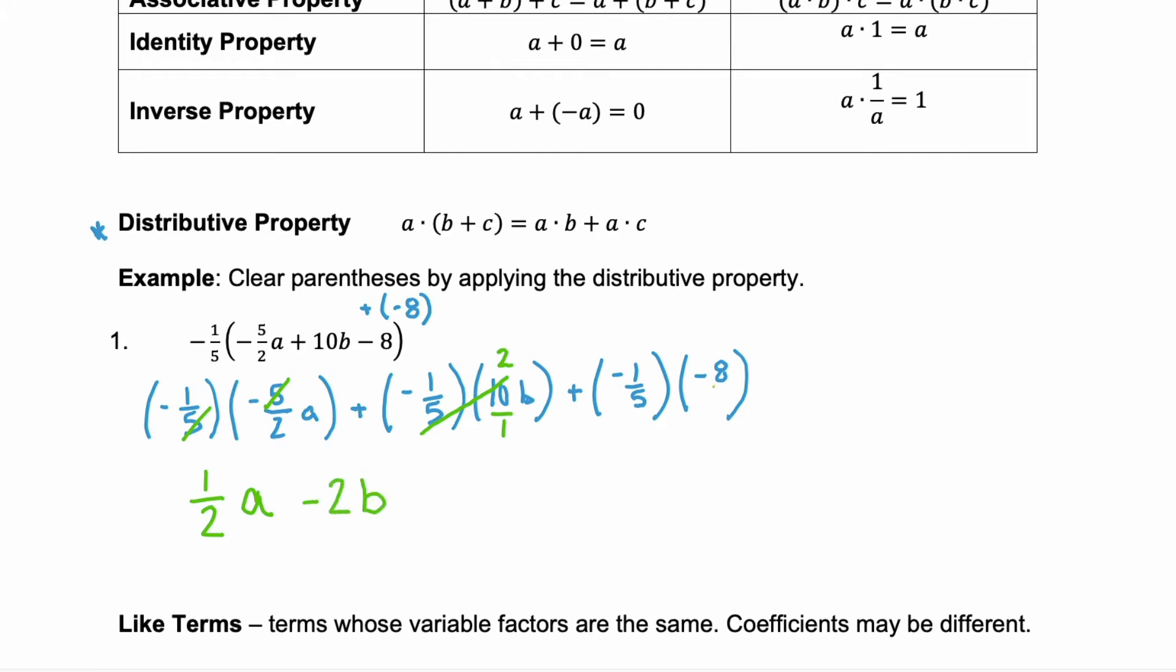And our last term the negative 8 is the same as negative 8 over 1. We have a negative times a negative. So we're going to end up with a positive. The 5 in the denominator and the 8 in the numerator do not share any factors in common. So we end up with 8/5. And these three terms are the simplification of that given expression.